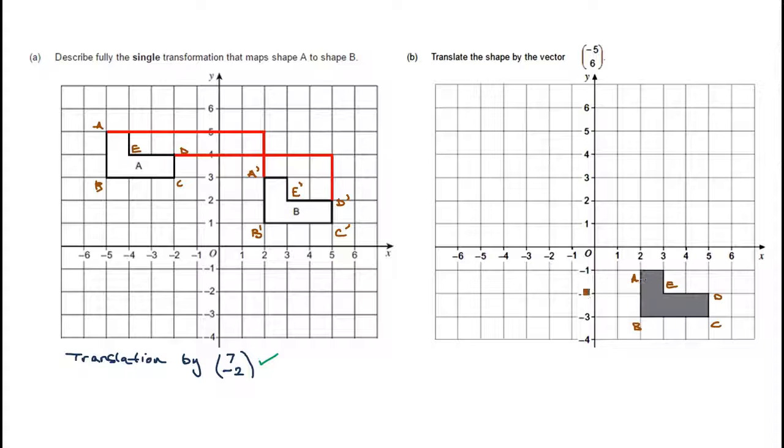All we really need to do is start at A prime. Once we've got a few of these points, then the rest should be straightforward. We've got to go minus five, so one, two, three, four, five. That means five to the left, taking us to here. And six up, one, two, three, four, five, six. So A prime should be up here.